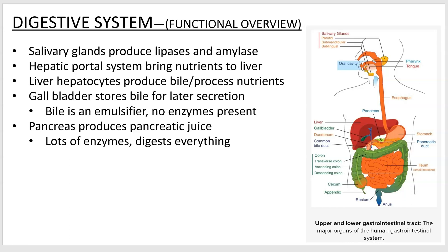The accessory organs include the salivary glands, which produce lipase and amylase. Amylase digests starch — I've been told that if you put a cracker in your mouth and let it sit for five to ten minutes it'll start tasting sweet because the starch is being broken down into sugars. The hepatic portal system is an important structure we learned about in the circulatory system; this is how you get nutrients out of your gut to the liver, where they are mostly processed.